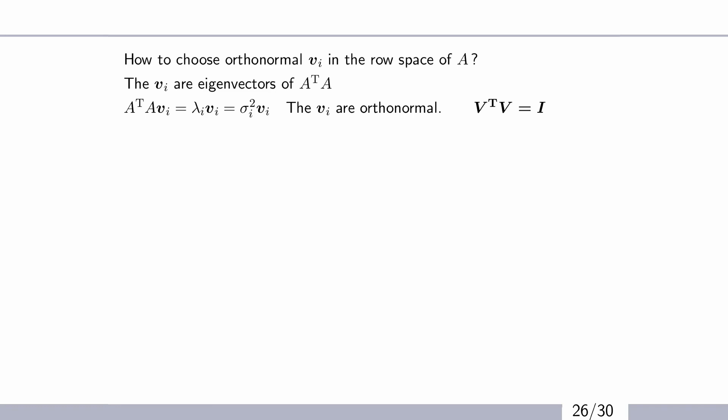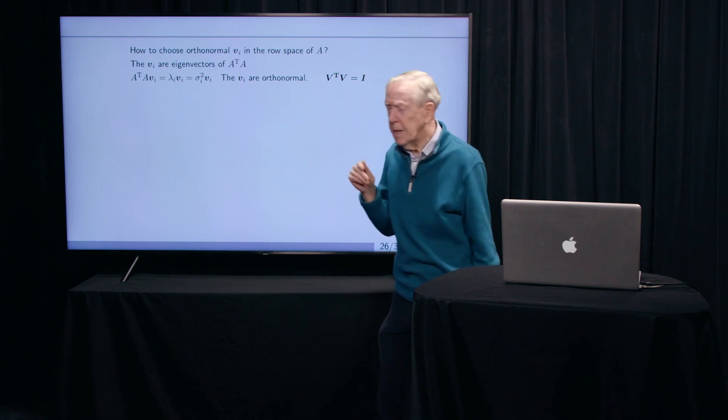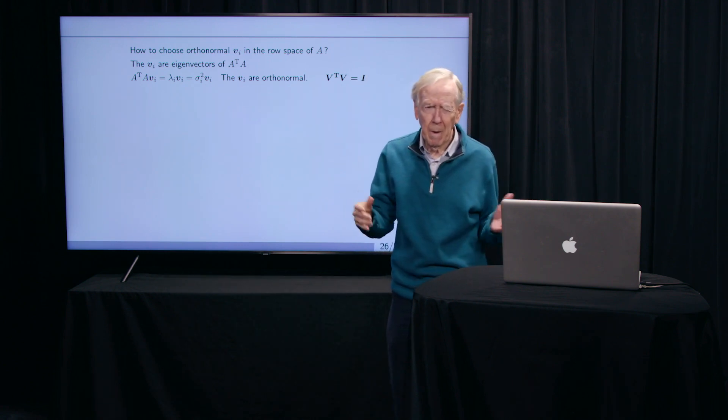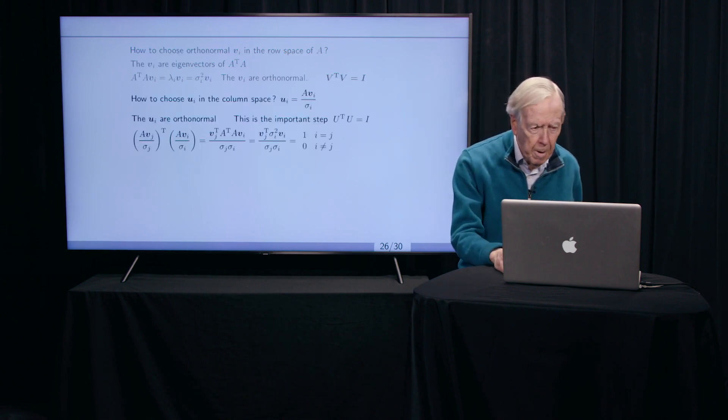So we can find those singular vectors just as fast as we can find eigenvectors for a symmetric matrix. And we know there, because A transpose A is symmetric, we know the eigenvectors are perpendicular to each other, orthonormal.